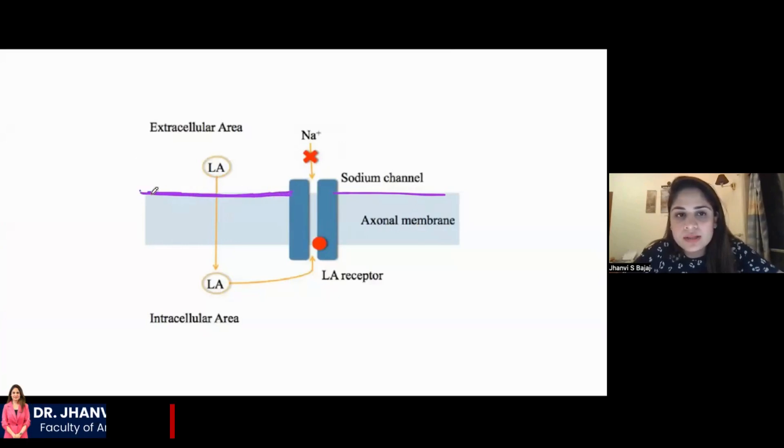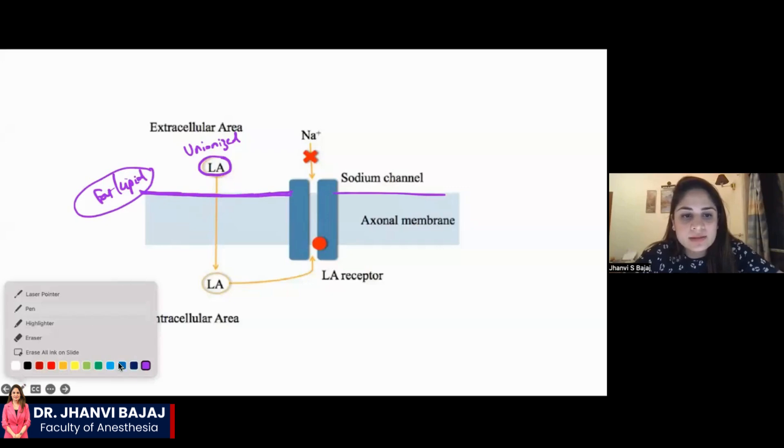Now, all the nerve membranes are made up of fat or they are made up of lipids. Okay. So, these local anesthetics are initially in the unionized form. Okay. So, in the unionized form, they are very, very lipid soluble. So, what they do is they just cross this lipid membrane of the nerve. They enter inside the nerve and they go inside the nerve.